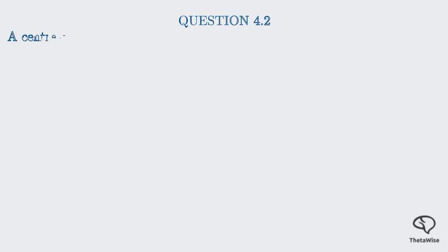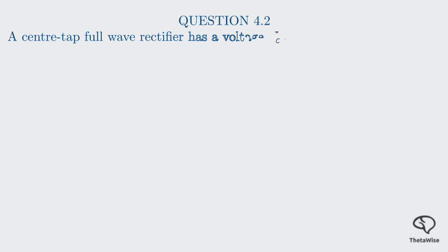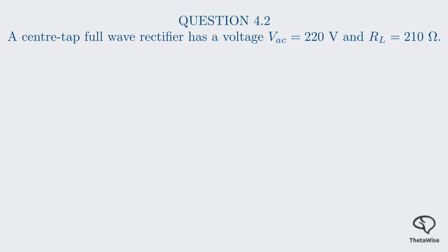Now let's move on to question 4.2. This part gives us a specific circuit to analyze — a center tap full-wave rectifier. It gives us two pieces of information: an AC voltage and a load resistance. The AC voltage, V_AC, is 220 volts, and the load resistance, R_L, is 210 ohms.